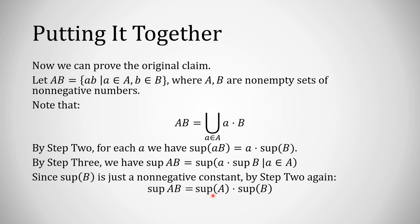The supremum of all the little a's is just sup(A). So altogether — by combining step one, step three, and step one again — factor out constant a, union everything together, then factor out the constant sup(B) — we get: sup(AB) = sup(A)·sup(B).